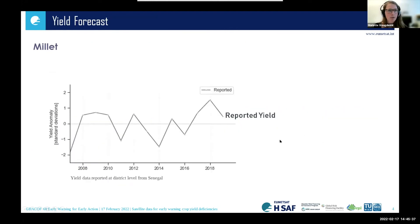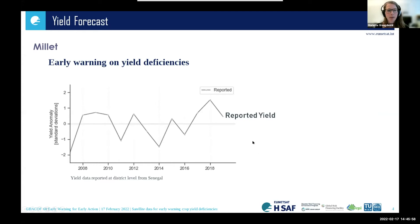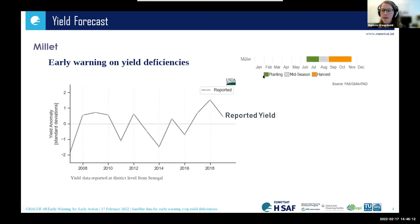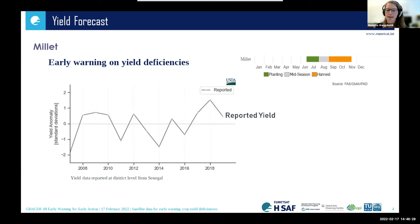To do yield forecasting, we used reported yield data at district level from Senegal — an example is shown here for Millet. The reported yields have been standardized and de-trended. What we wanted to do is get an early warning on yield deficiency — when yields fall below the average for Millet. We looked at the planting period, which for Millet in Senegal runs from June to the end of July, and examined rainfall, soil moisture, and NDVI data for that period to predict yield variability.